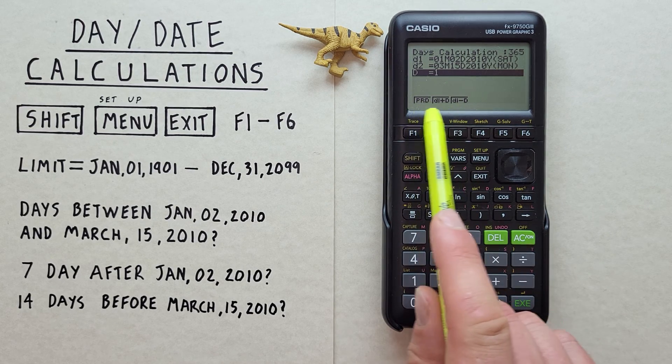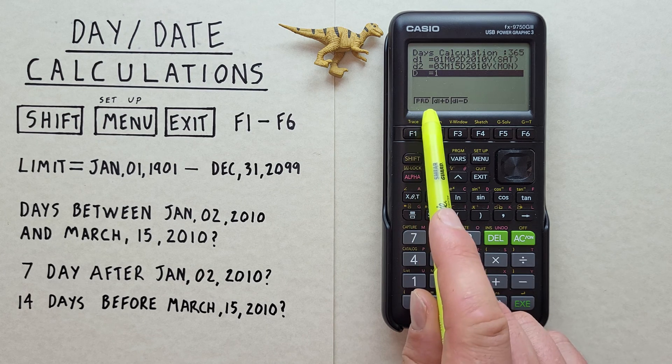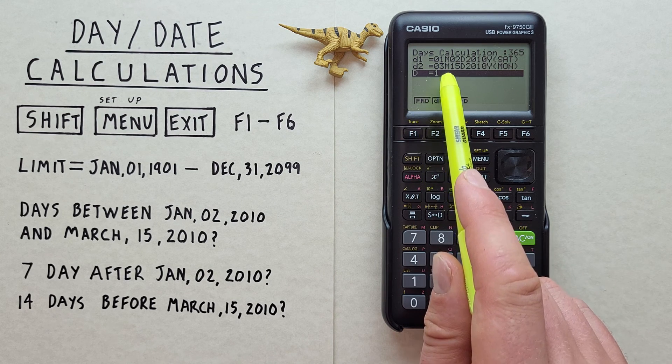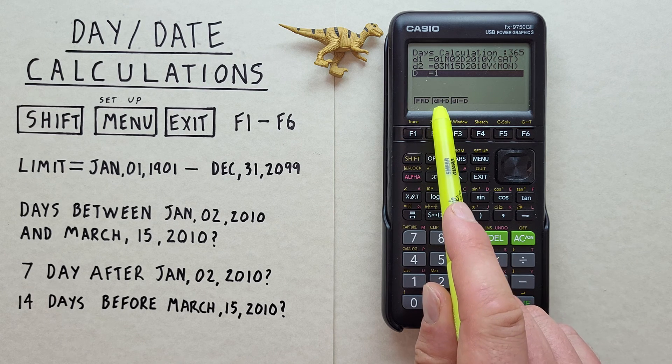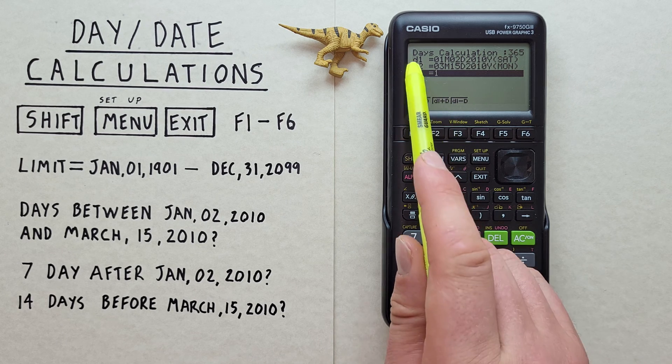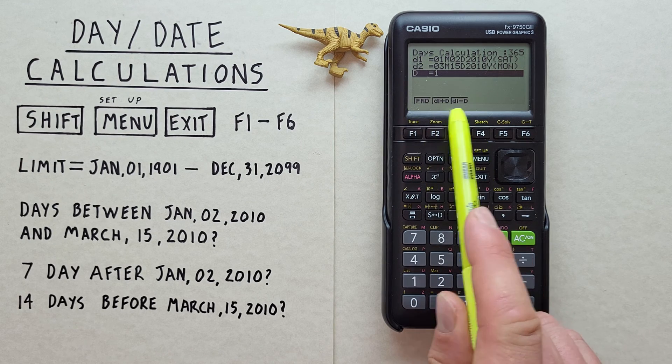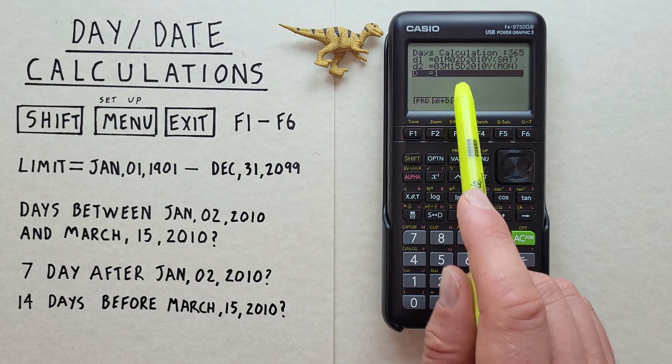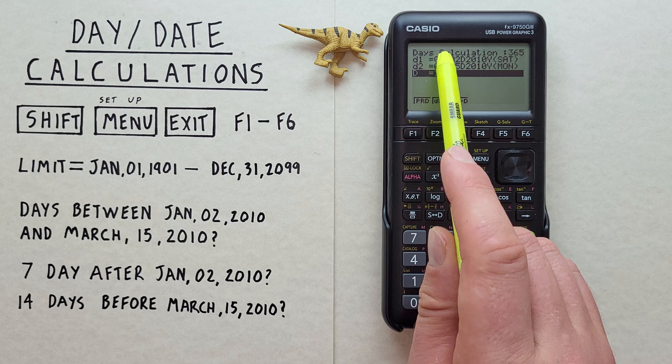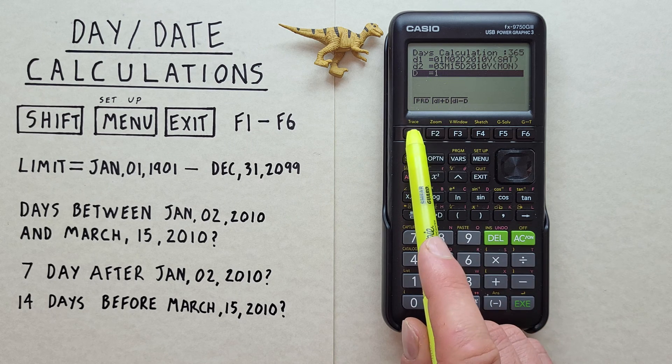Now down at the bottom here, we have our options. We have PRD, which is number of days between D1 and D2. D1 plus D, which is where we can calculate a number of days past D1. And D1 minus D, where we can calculate the number of days before D1. So since we wanted to calculate the number of days between D1 and D2, we'll hit F1 for PRD.